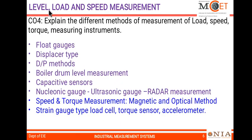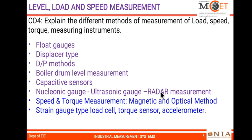CO4 deals with liquid level measurement, load, and speed measurement. For liquid level measurement, float gauges and displacer-type transducers are used for open and closed tanks. The differential pressure transmitter (DPT) method is most commonly used in industries for liquid level measurement, applicable to both open and closed tanks — for example, boiler drum level measurement using DPT. Capacitive sensors are suitable for conducting and non-conducting liquids. Non-contact methods including nucleonic gauges, ultrasonic gauges, and radar measurement are also applicable in process industries.